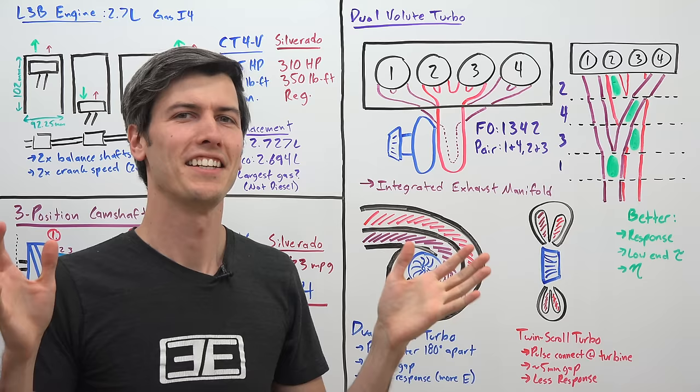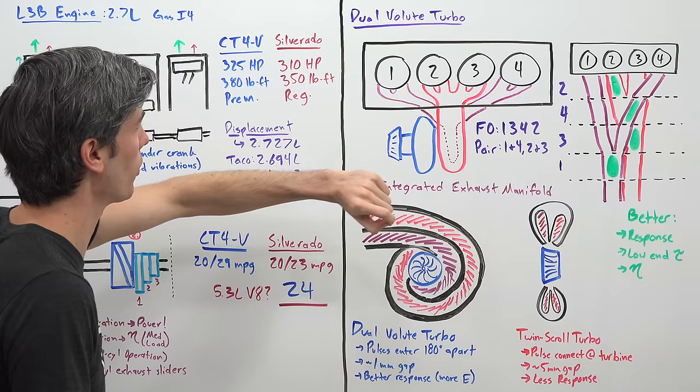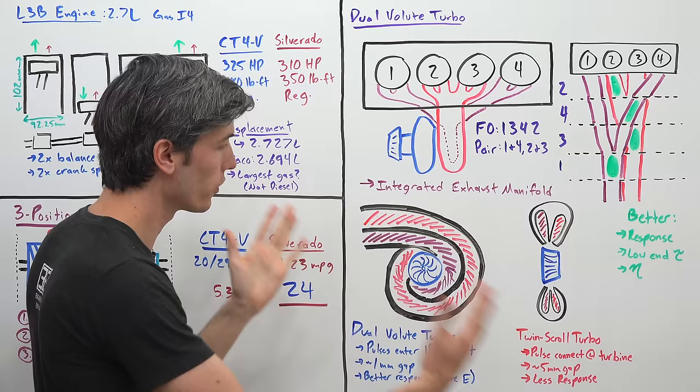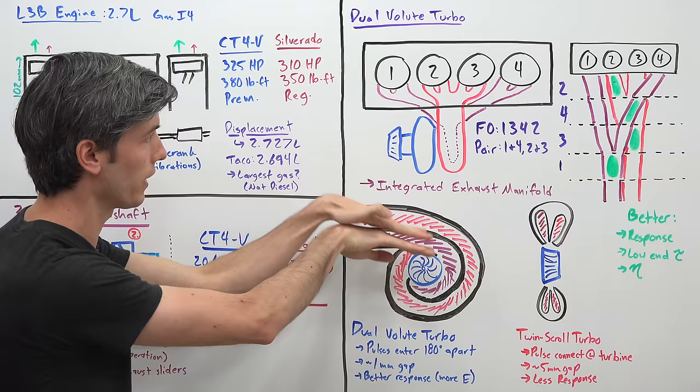Now regardless of whether this engine actually makes any sense or not, it does have a very cool turbocharger, a dual volute turbo. So what is a dual volute turbo? Well it simply means that it has two volutes one on top of the other. You may have heard of twin scroll turbochargers, these are fairly similar in principle but they have two scrolls side by side rather than one volute on top of the other. So what's the advantage of doing something like this and what's the difference versus a twin scroll as far as advantages are concerned?